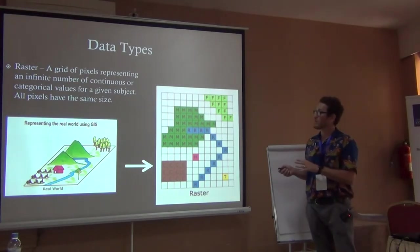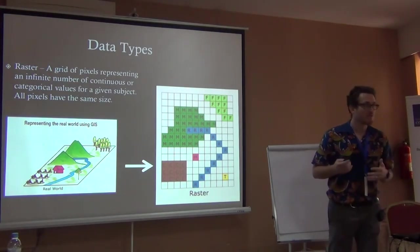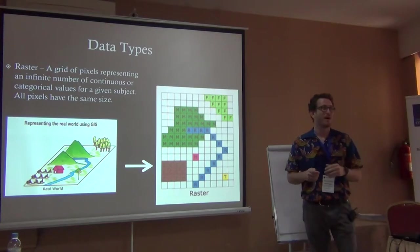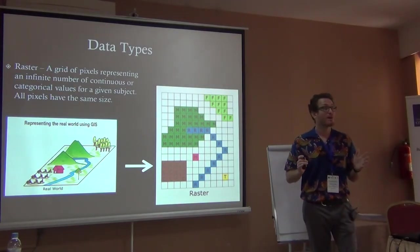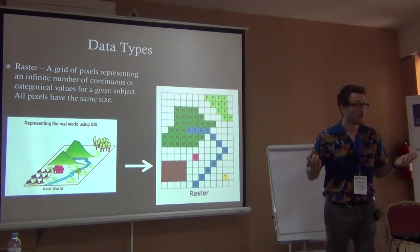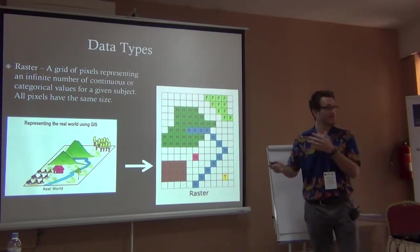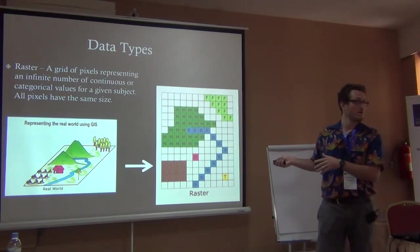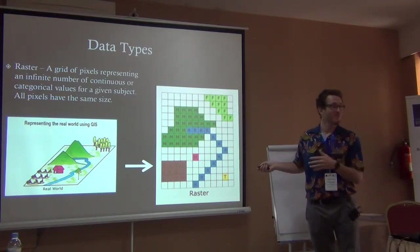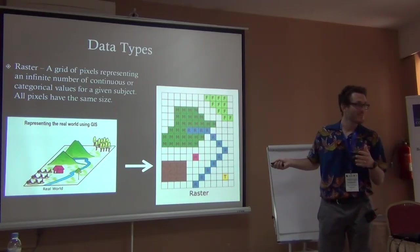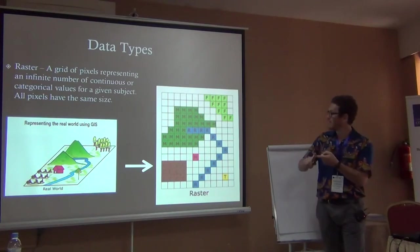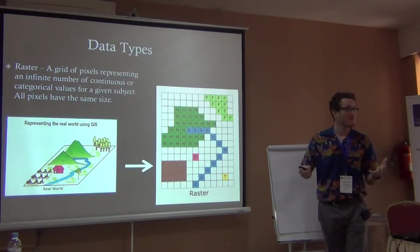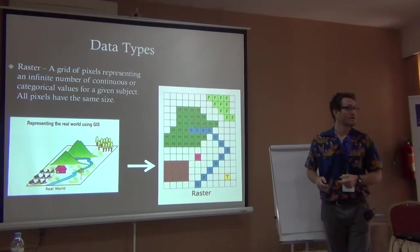A raster is a grid of pixels representing an infinite number of different values. It can represent continuous values — like 1.5, 2.5, 3.7, 8.6 — for example if we're representing temperature. Or it can be categorical, where we have a very limited set of values such as M, R, H, C, T, and F with nothing in between. This is called categorical raster data because each value represents one of a set of categories.